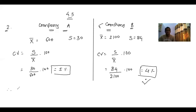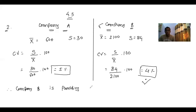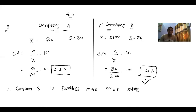We write the conclusion: Company B is providing more stable salary, because lower the CV, higher the efficiency. This completes the simple sum on Coefficient of Variation (CV). Now let's move to the next sum.